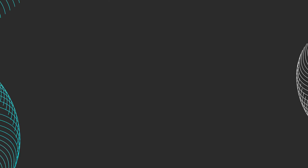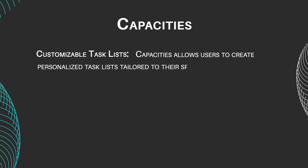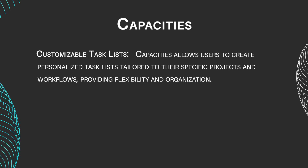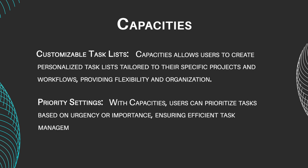Let's take a look at these programs' main features. Customizable task lists: Capacities allows users to create personalized task lists tailored to their specific projects and workflows, providing flexibility and organization. Priority settings: with Capacities, users can prioritize tasks based on urgency and importance, ensuring efficient task management and focused productivity.